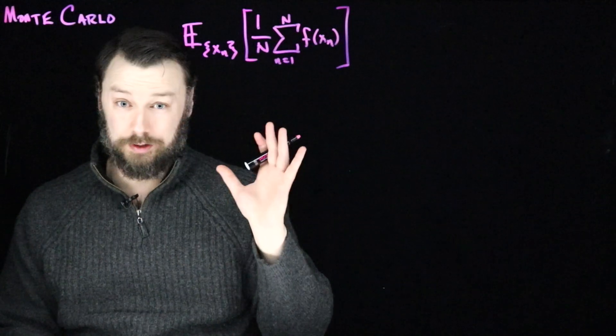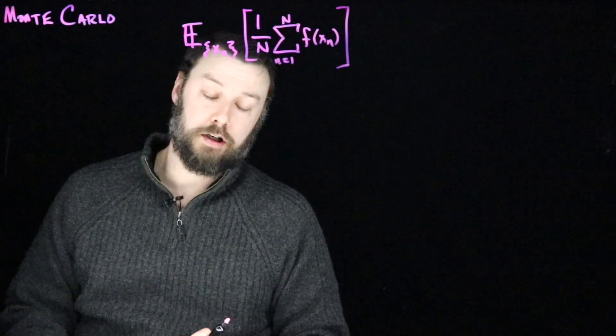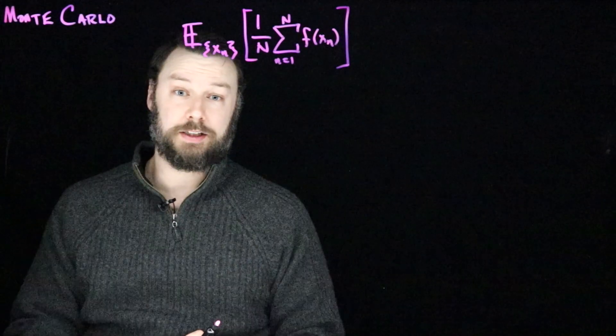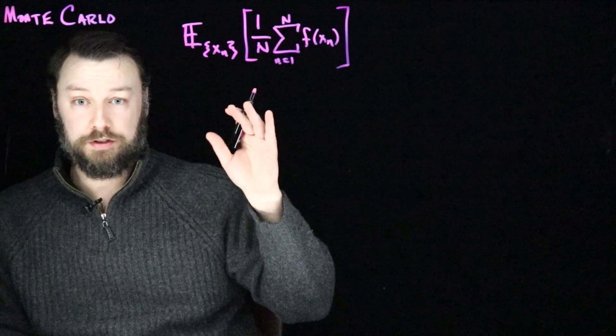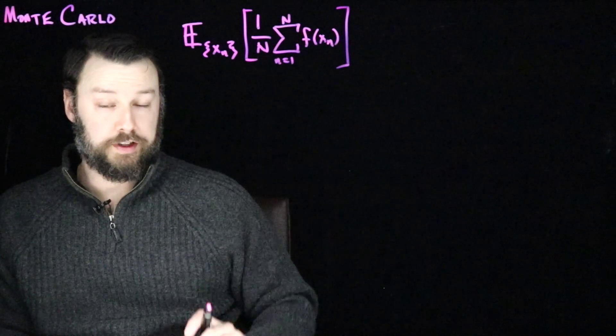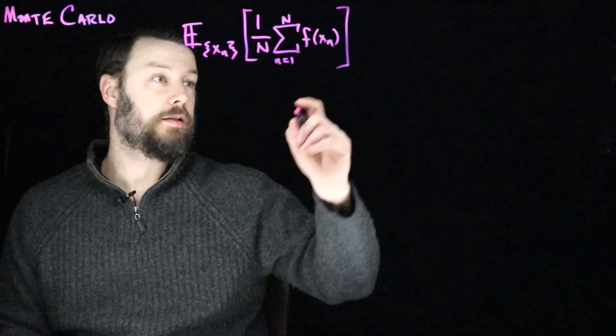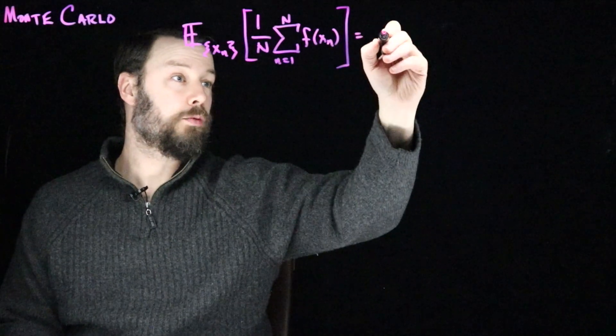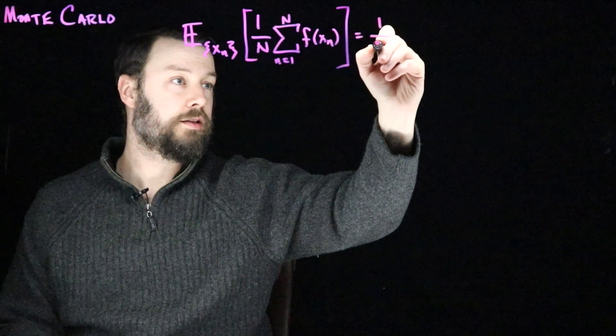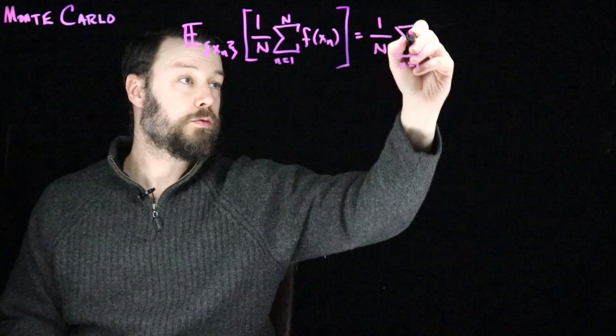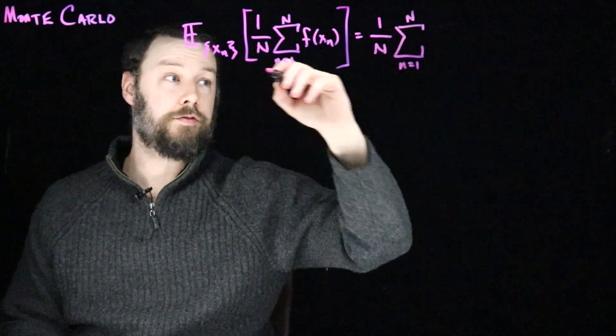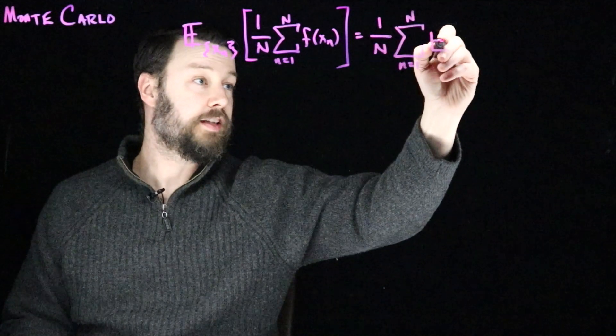So this is just a sample average over the samples xn. And I'm asking what happens under all possible xn's that I might get. And I just want to make sure that that gives me the integral that I want to compute, that it gives me the right expectation. The first thing that you notice is that an expectation of a sum is the sum of the expectation. And so I can immediately go in, and I can replace this with a one over n, sum equals one to n, now of this expectation on the inside.